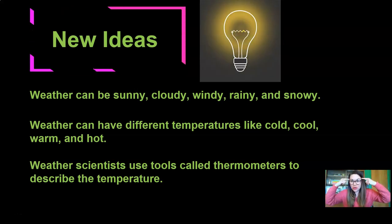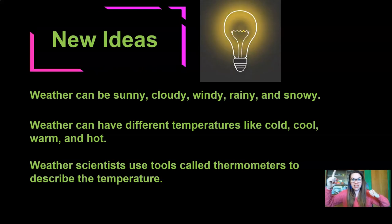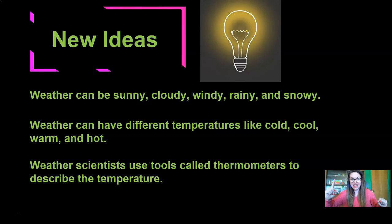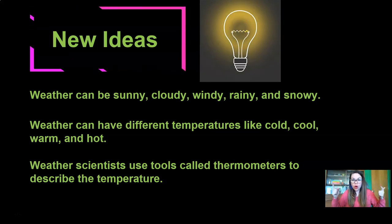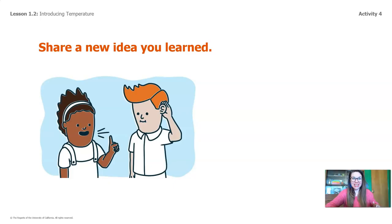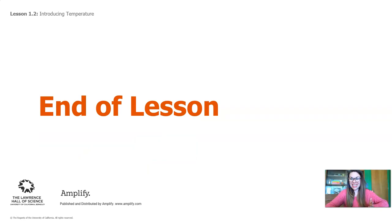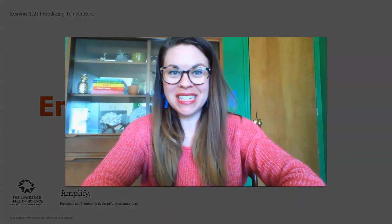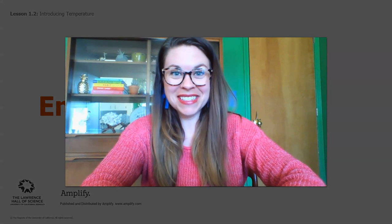Here are our new ideas for today. Number one: weather can be sunny, cloudy, windy, rainy, and snowy — we learned that from Ms. Diaz. Number two: weather can have different temperatures like cold, cool, warm, and hot. And number three: weather scientists use tools called thermometers to describe the temperature. I want you to find somebody in your house and share a new idea that you learned today. That's the end — we will see you next time. Have a great day and stay curious. Bye!